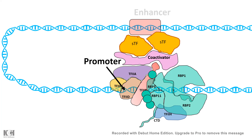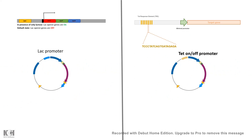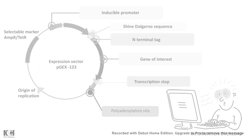Let's break these down one by one. First, the inducible promoter: in eukaryotic transcription you need a promoter region where RNA polymerase binds and starts transcription. If you want to express a protein in bacteria, the lac operon is a good inducible choice — by default it is off, but it can be induced by allolactose or a synthetic variant called IPTG. Other systems like the Tet-On/Tet-Off system are also useful, especially for mammalian cells.